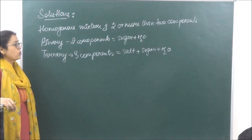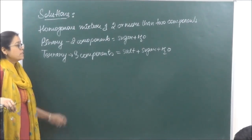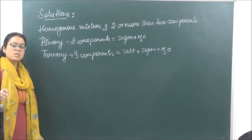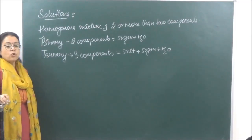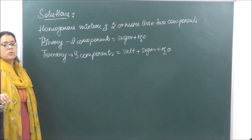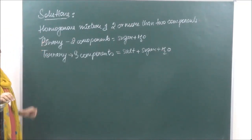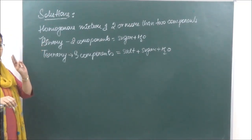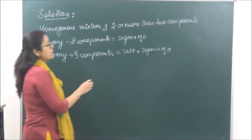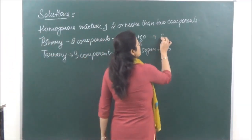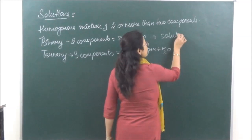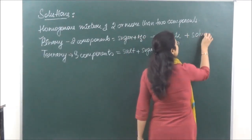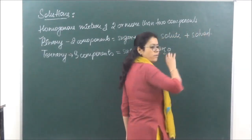Is chapter mein, simplicity ke liye, sirf binary solutions hi dekhenge. So koi bhi ek solution hota hai, binary solution agar le rahe hain, to uske paas two components hote hain. Ek component ko hum kya bulaate hain? That is known as the solute, and the other one, that is known as the solvent.